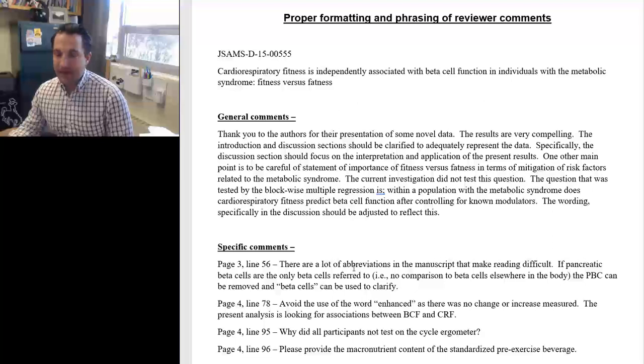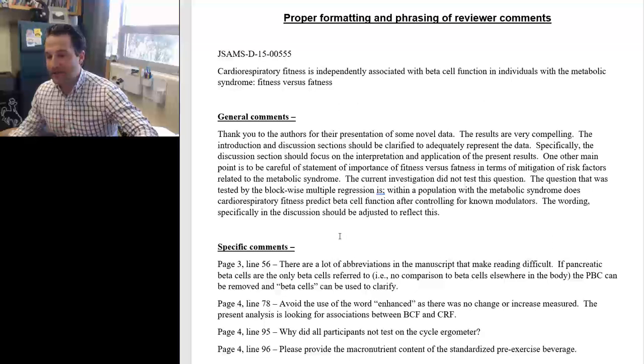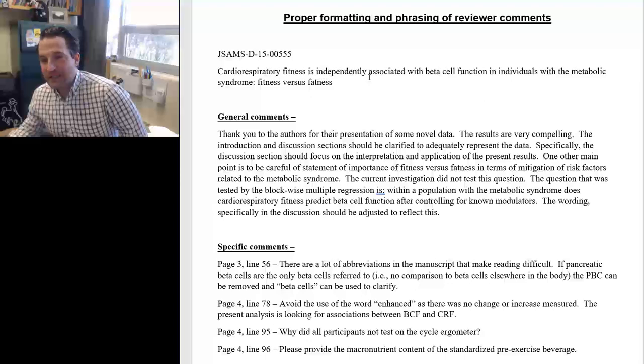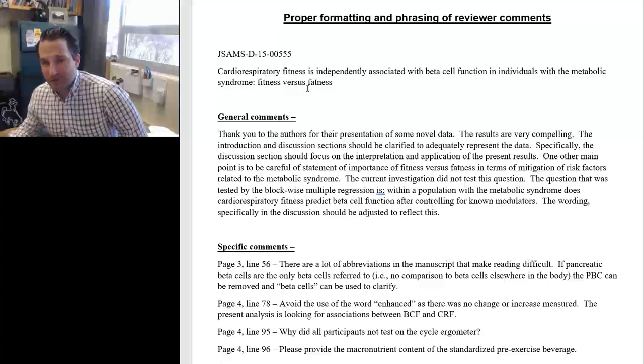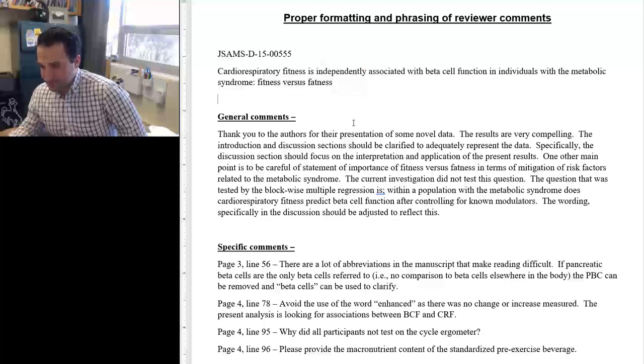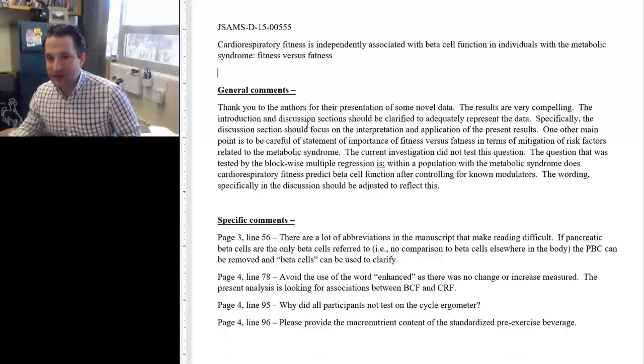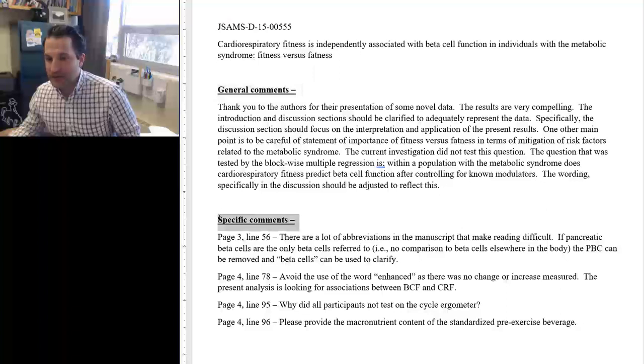So how do you want to do this? Well, here's just an example of a very short review. I obviously truncated this because you didn't need to see all the points. So this was about cardiorespiratory fitness and independently associated with beta cell function in individuals with metabolic syndrome, fitness versus fatness. So it's about fitness or body fat percentage. What you want to do overall is the main structure of your review is going to be sectioned into two parts, your general comments overall and then your specific comments.